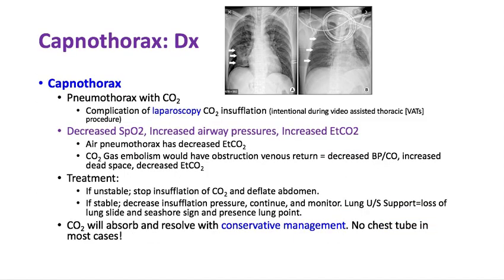The next keyword is capnothorax — CO2 in the pleural space, as opposed to pneumothorax. This was a 2019 keyword. Capnothorax is a potential complication of abdominal laparoscopy where CO2 is insufflated into the abdomen; it can track up through openings in the diaphragm into the chest. During a VATS procedure, CO2 is sometimes insufflated intentionally to compress the lung, making it an intentional capnothorax.